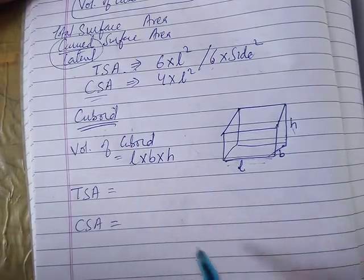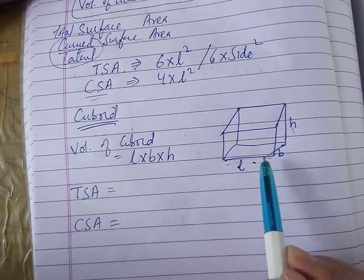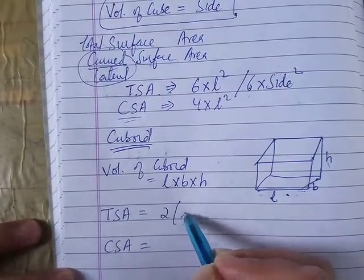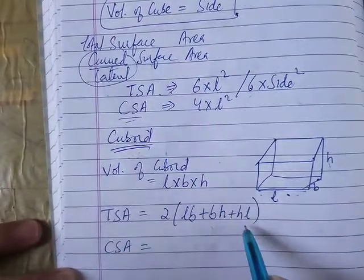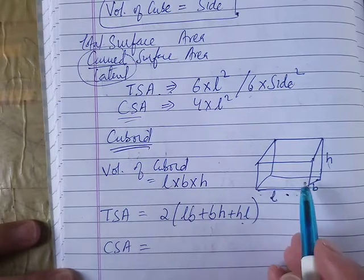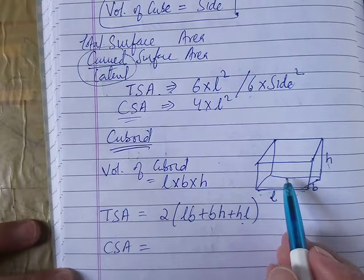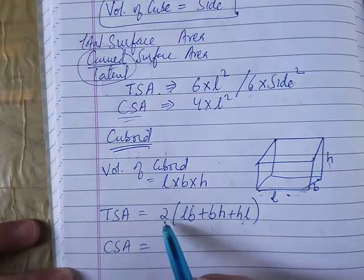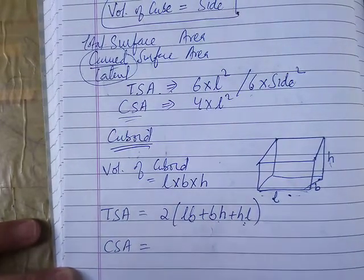Total surface area includes top and bottom. Total surface area is 2 times length into breadth plus breadth into height plus height into length. This is the total surface area.